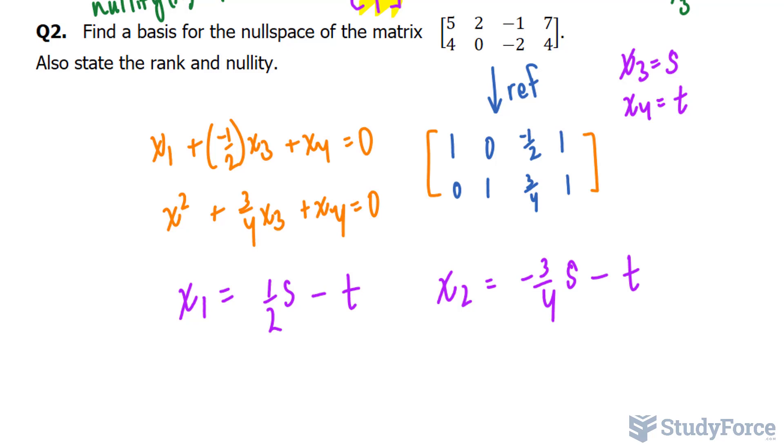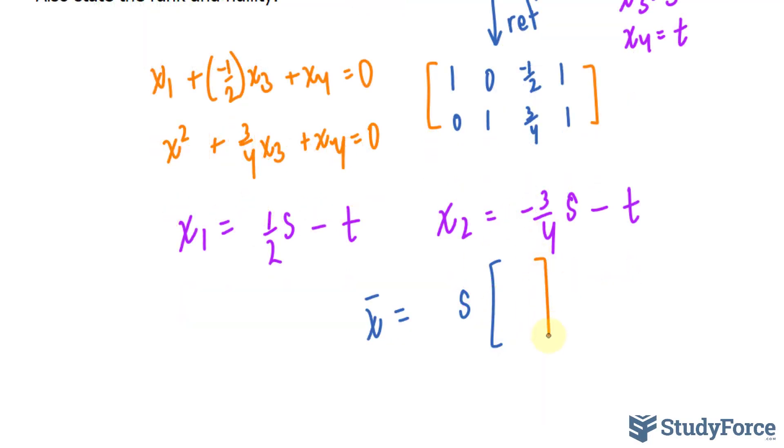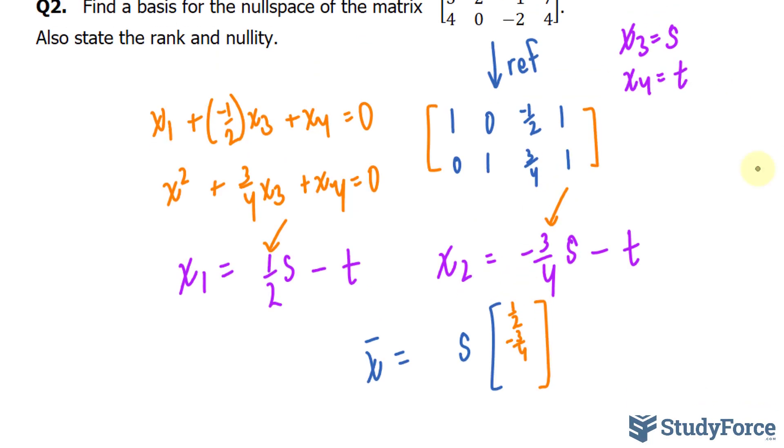Just like what we did with question 1, I can rewrite this neatly as s. And to fill this in, the first element will be half. The second element relates x sub 2 and it's negative 3 over 4. We're looking at the coefficients in case you're confused. s has to be equal to 1 and it represents x sub 3. So I'll put a 1 here and t is equal to 0.